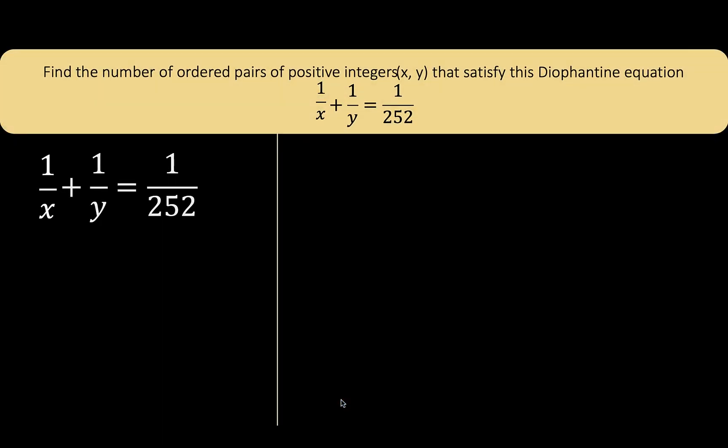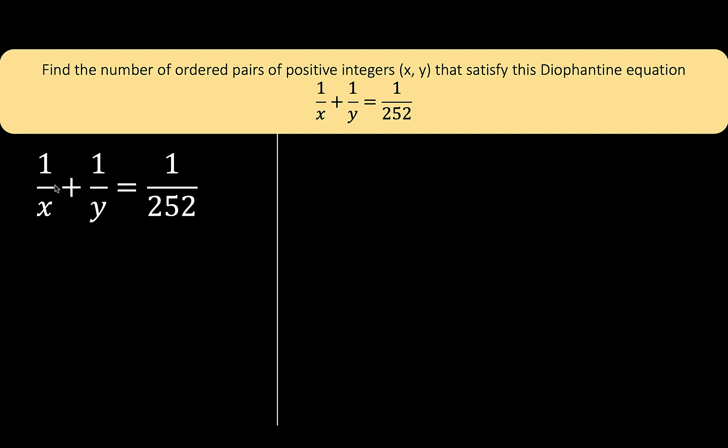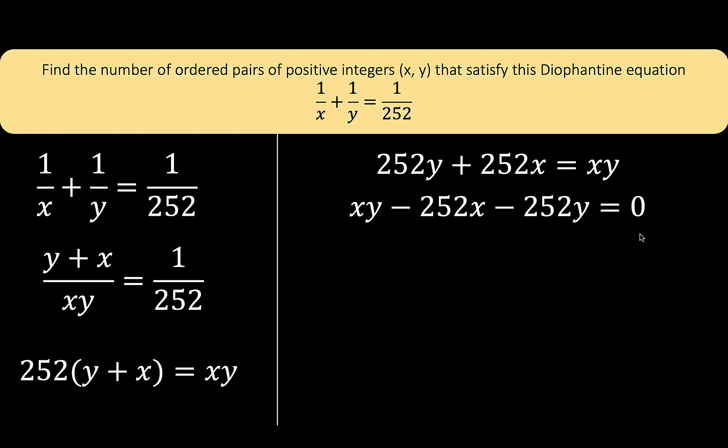Let's begin by first simplifying the given equation. Let's add the fractions at the left to arrive at y plus x over xy equals 1 over 252. Now let's multiply both sides by the least common denominator using cross multiplication. We distribute 252 to the binomial y plus x, and gather all the terms at the left side. The right side is 0.